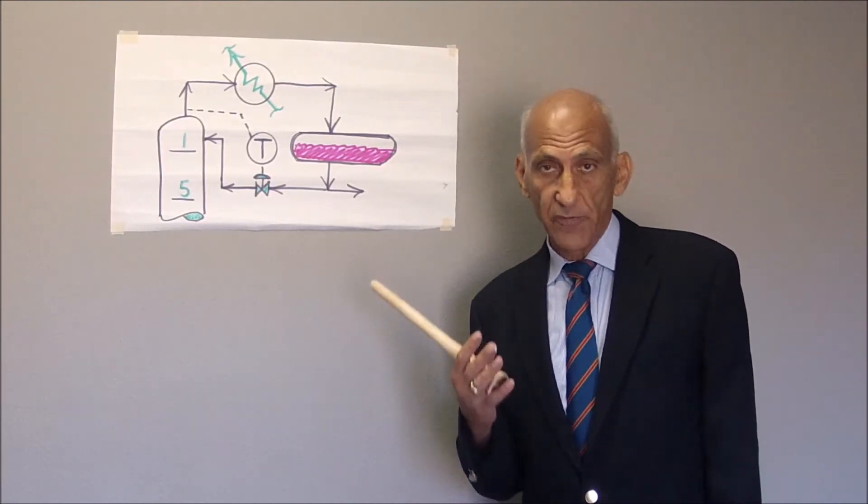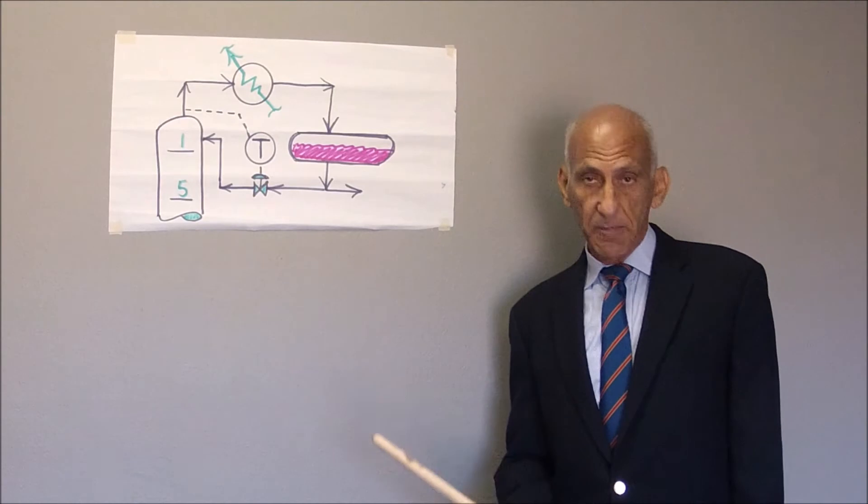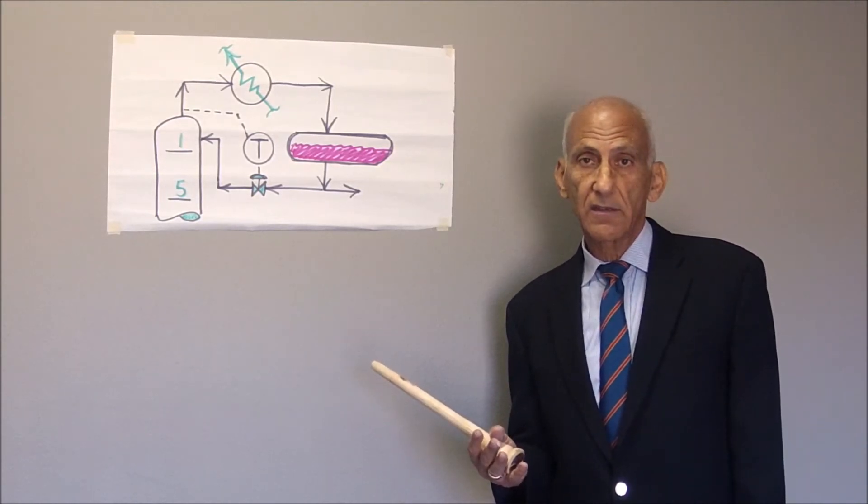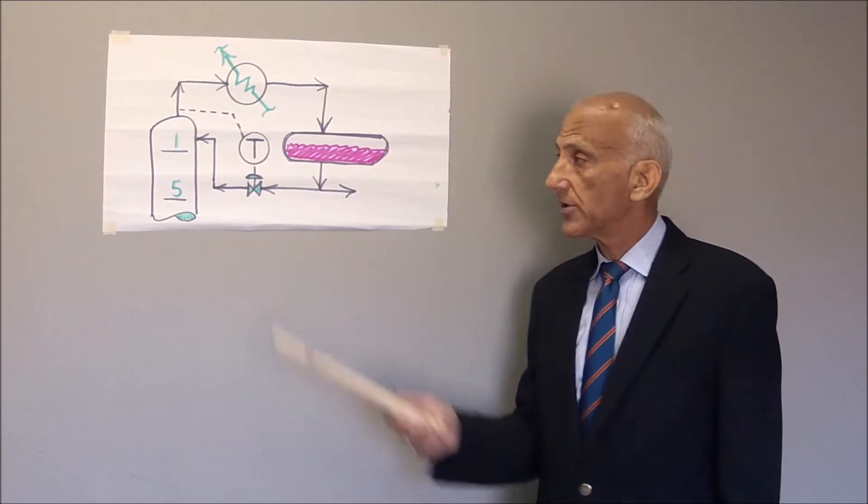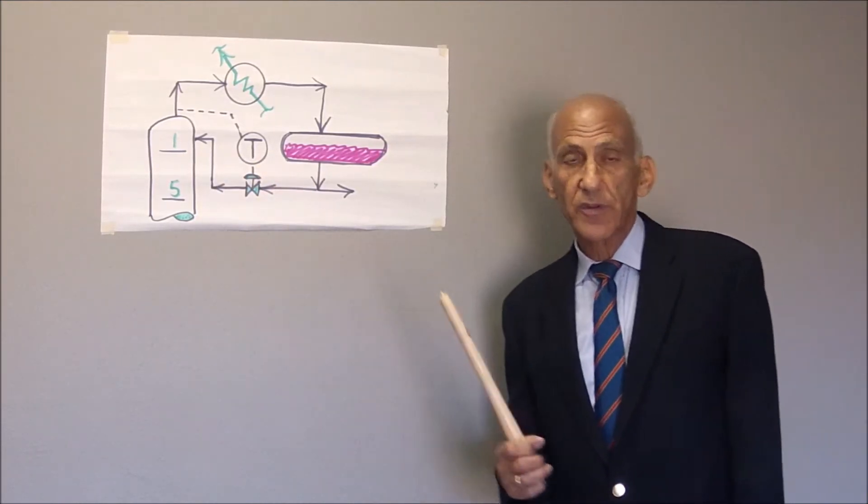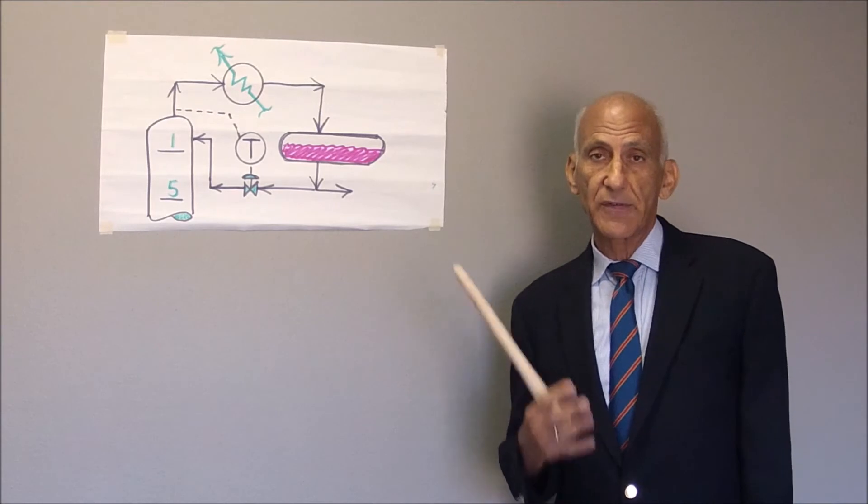This then increases the vapor flow through the tray, which increases the vapor pressure drop flowing through the top tray, which will then promote higher levels of entrainment.